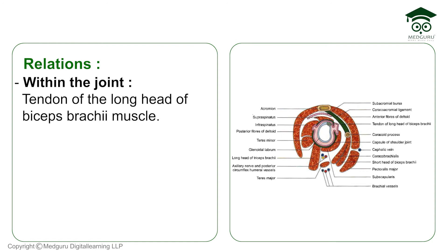The last relation is within the joint itself. The tendon of the long head of the biceps brachii muscle passes within the joint. That covers all the relations of the shoulder joint.